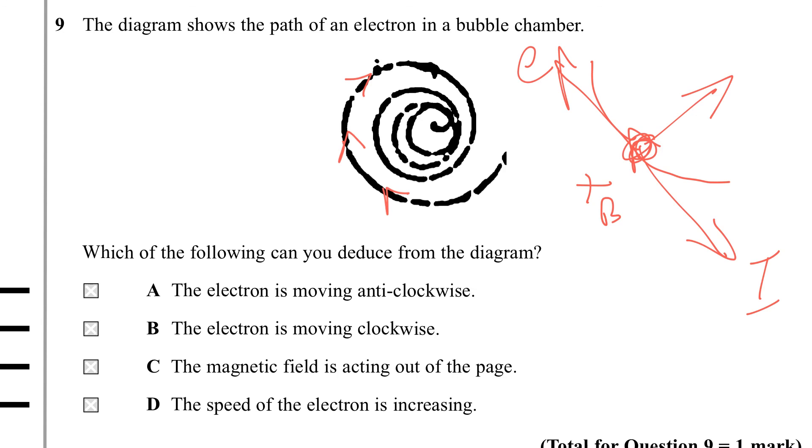So field is definitely into the page. But we didn't really need to do any of this, because we only have a choice between clockwise and anti-clockwise, and this is clearly going clockwise. So the answer is B. All these other answers are wrong. It's not anti-clockwise, the field isn't out of the page, and the electron isn't speeding up.